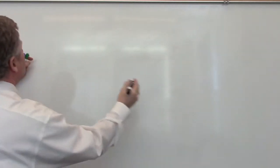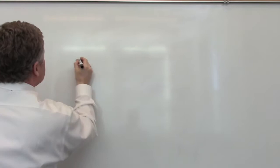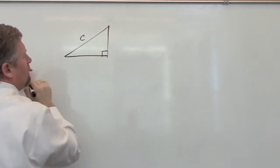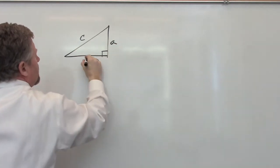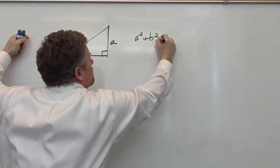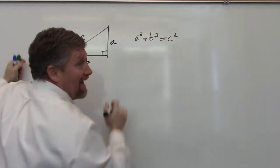So let's start off by looking at any old right triangle. I'll call that hypotenuse C, one of the legs A, one of the legs B, and we all know that A squared plus B squared equals C squared. Yeah? Yeah.